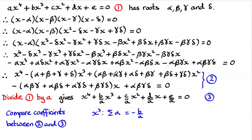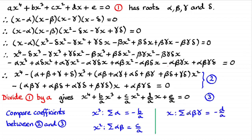Comparing the coefficients of x squared, we see that the sum of the product pairs of roots equals c over a. Comparing the coefficients of x, the sum of all products of three roots equals minus d over a. And finally, comparing the constant terms, the product of all roots equals e over a. So that's a proof of those basic results.